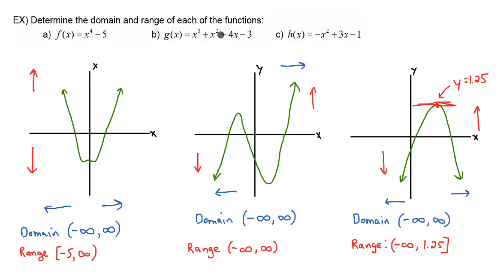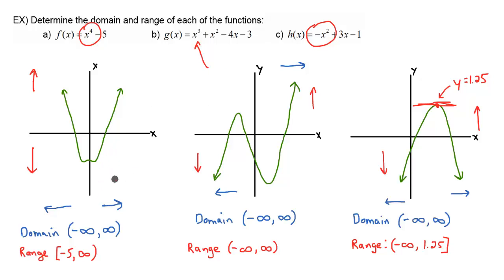Looking at each of these functions — f of x, g of x, and h of x — all the domains are all real numbers. So unless you have some crazy constraint on a polynomial, the domain is usually going to be all real numbers. For an odd-degree function like g of x, the end behavior goes in opposite directions in terms of y, so the range is always going to be all real numbers when the degree is odd. But when the degree is even — like degree 4 or degree 2 — there's going to be either a bottoming out or a topping out. So the range will change whenever you have an even degree: 2, 4, 6, and so on.